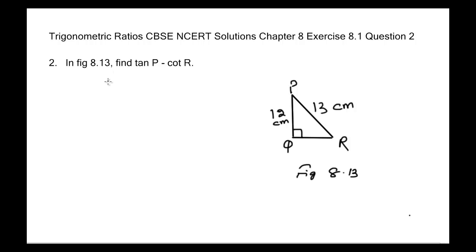This is CBSE NCERT Solutions, Chapter 8, Introduction to Trigonometry, Exercise 8.1, Question Number 2. The problem is: In the given figure 8.13, find the value of tan P minus cot R. We will proceed with the solution.